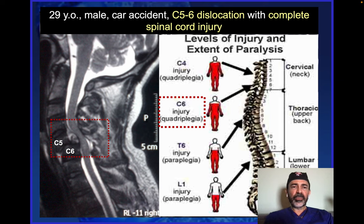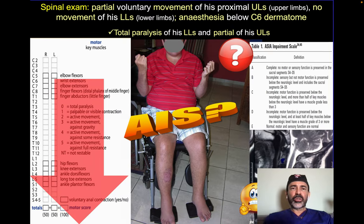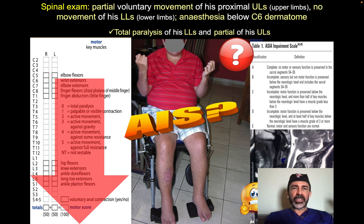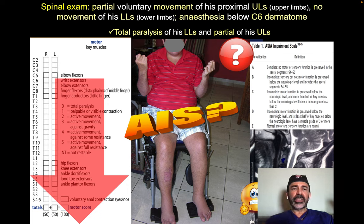This patient had a C5–C6 trauma with complete spinal cord injury associated with the spinal column level C5. He presented with partial movements of his upper limbs — proximal key muscles were working. However, there were no distal movements of his upper limbs and no movements of his lower limbs, with anesthesia from the dermatome of C6 and below. So what is the ASIA Impairment Scale of this patient from A to E?